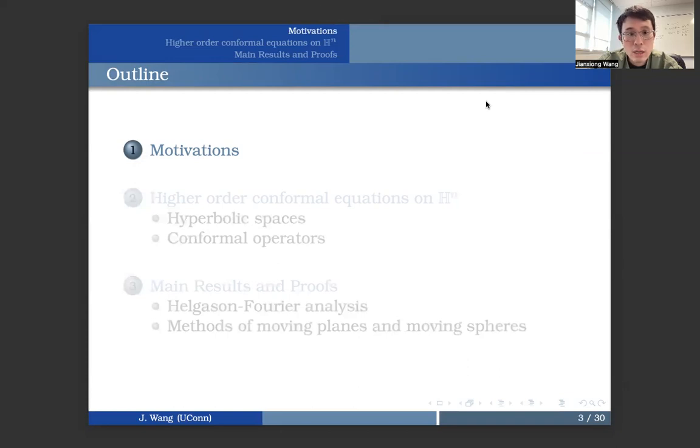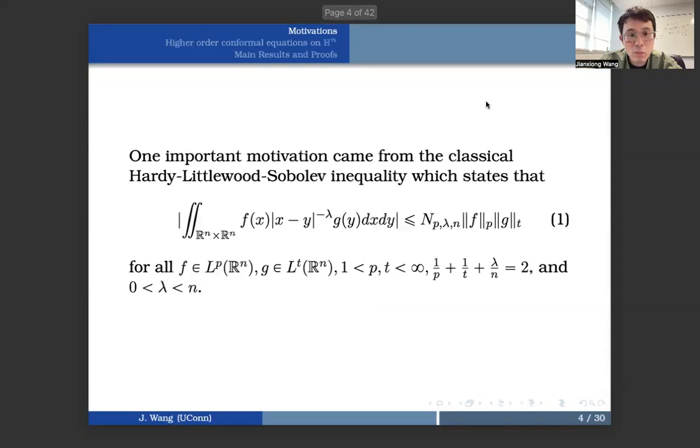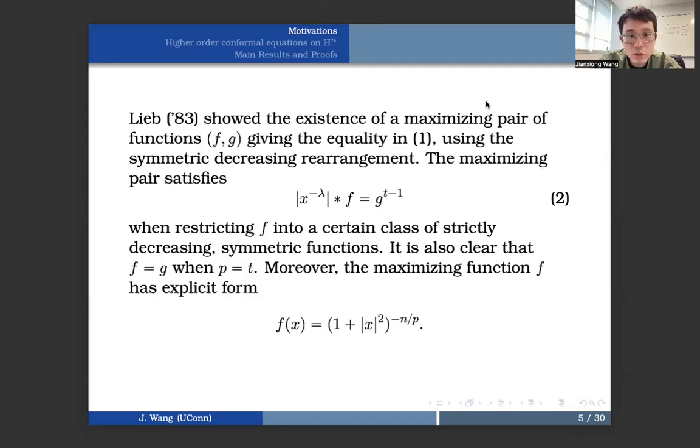Let's move on to the first one, the motivations. Actually, one of the most important motivations came from the classic Hardy-Littlewood-Sobolev inequality, which concerns this kind of integral with two functions f and g. And in 1983, Lieb showed the existence of a maximizing pair of functions f and g, giving the